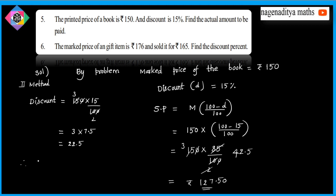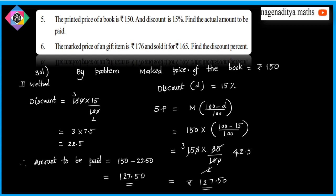Therefore, amount to be paid equals 150 minus 22.5, which equals 127.5 rupees — that is 127 rupees 50 paise.